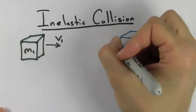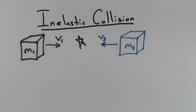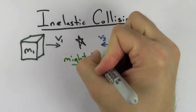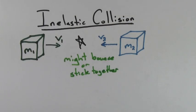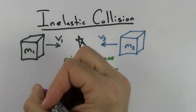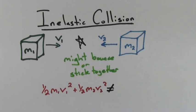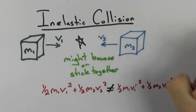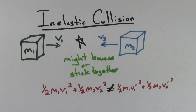An inelastic collision is any collision where the total kinetic energy is not conserved. In an inelastic collision the objects might bounce off of each other or they might stick together. Regardless of what happens during the collision, in an inelastic collision some of the initial kinetic energy gets turned into heat and other forms of non-mechanical energy.